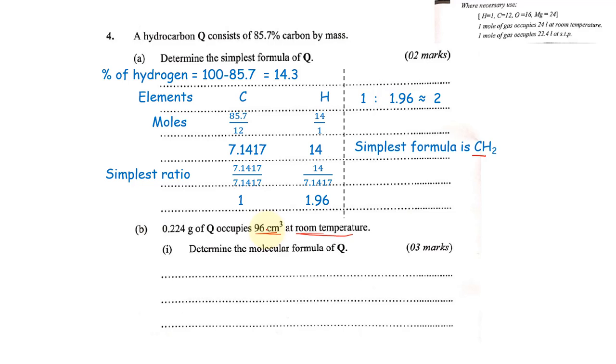If it's a solid, we shall deal with mass, and if it's a liquid, we might use volume as well. We have 96 cubic centimeters at room temperature. But we know that one mole of a gas occupies 24 liters at room temperature. Now, 24 liters is the same as 24,000 cubic centimeters.